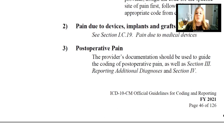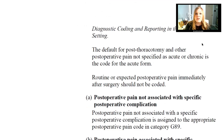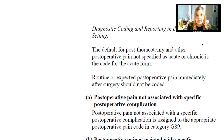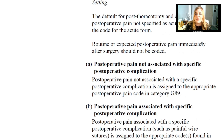Post-operative pain: the provider's documentation should be used to guide the coding of post-operative pain, as well as section 3, reporting additional diagnoses, and section 4, diagnostic coding and reporting in the outpatient setting. The default for post-thoracotomy and other post-operative pain not specified as acute or chronic is the code for the acute form. Routine or expected post-operative pain — like pain after a hysterectomy — should not be coded additionally. Post-op pain not associated with a specific post-op complication is assigned to the appropriate post-operative pain code in category G89.